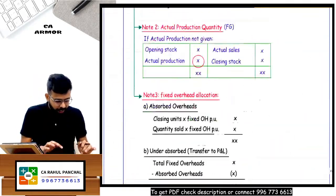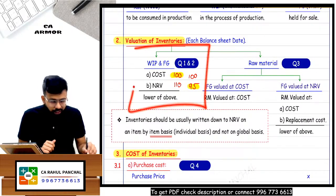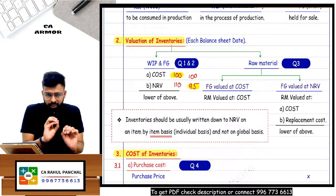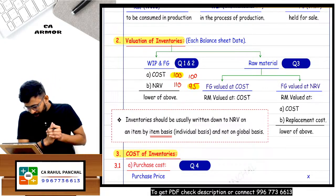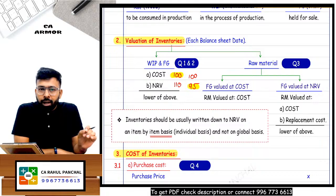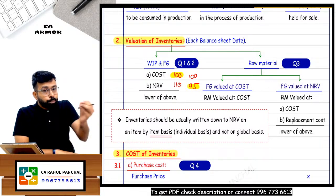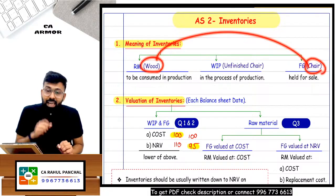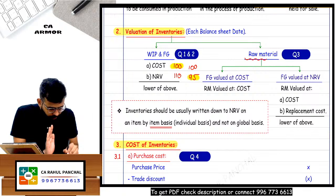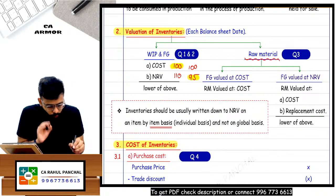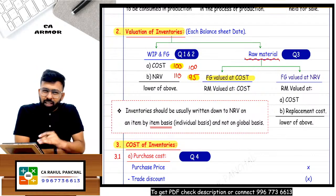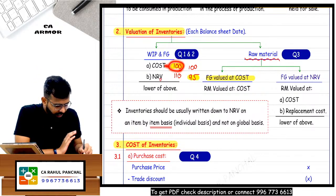WIP and finished goods valuation is done. Now something special about raw material and WIP. Do you sell raw material in the market? No. You always purchase raw material — wood — and what you sell is the finished chair. So for raw material, we cannot directly get a selling price from the market.